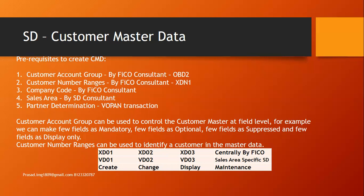Customer account group is used to control the customer master data at field level — at each and every field level we can control the customer master. For example, we can make some fields mandatory, few fields optional, few fields suppressed, and few fields as display only.